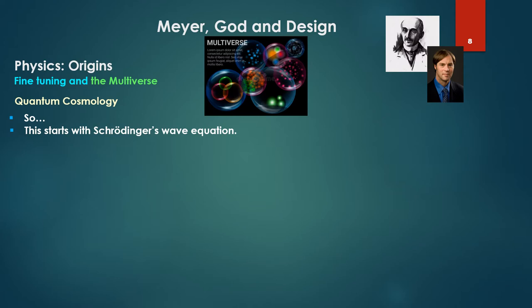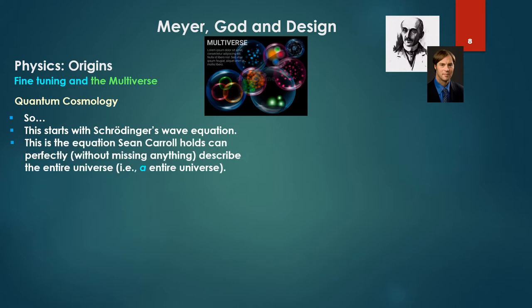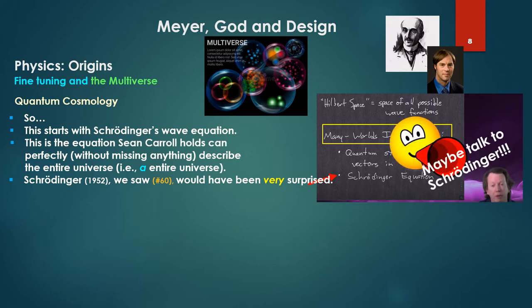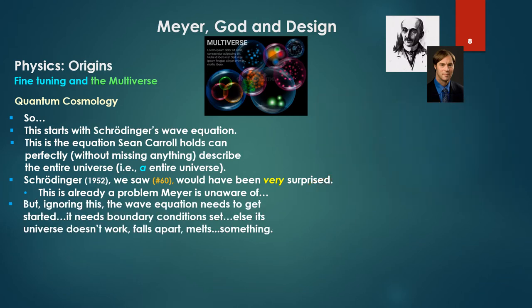This starts with Schrödinger's wave equation—the equation Sean Carroll holds can perfectly, without missing anything, sufficiently and completely describe the entire universe. That is, an entire universe. Notice he likes the many-worlds interpretation because he thinks Schrödinger perfectly describes the universe. Which we saw in number 60: Schrödinger in 1952, as he would have noted, would have been very surprised that Carroll believed this. Maybe Sean should have talked to Schrödinger, because this is already a problem at the base of things. But ignoring this, the wave equation needs to get started—it needs boundary conditions set, else this universe doesn't work, it falls apart, it melts or something.